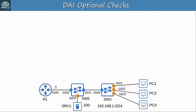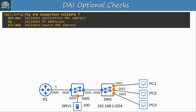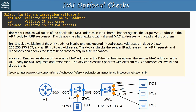Now let me introduce the additional optional validation checks. By default, DAI checks the sender MAC and IP addresses against the DHCP snooping binding table. However, additional checks can be performed by configuring the ip arp inspection validate command. The three options are destination MAC, IP, and source MAC. Destination MAC validates ARP responses by checking the destination MAC address in the Ethernet header against the target MAC address in the ARP message — if they are different, the frame is dropped.